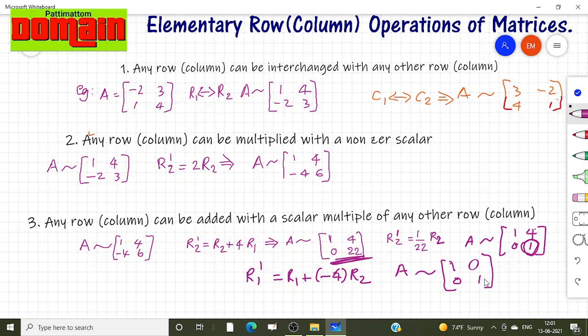Really we got an identity matrix. Isn't it? Any square matrix like this, using these transformation techniques, can be brought to an identity matrix like this.